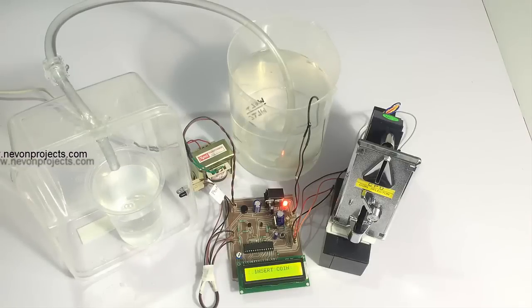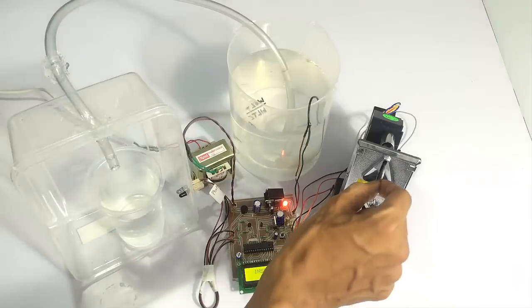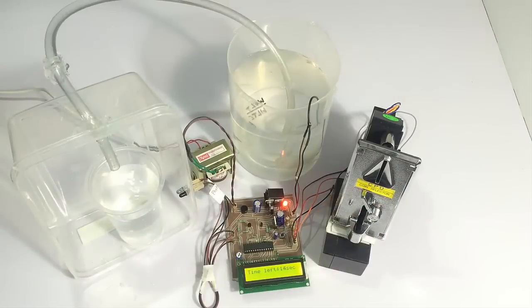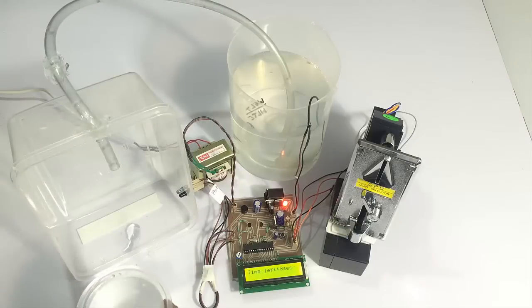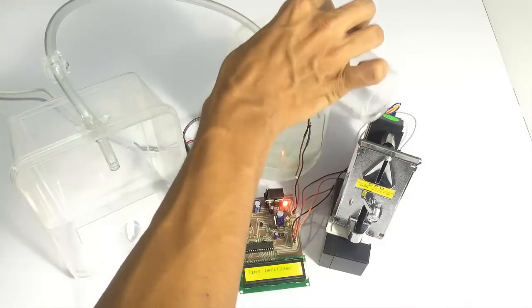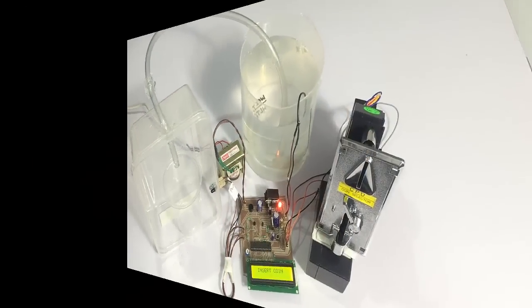Now let's check one more feature. Let's insert a coin to start the supply and then let's remove the glass in between the supply. So now it's pouring water. Now let's remove the glass, and as you can see, as soon as it detected the glass is not in place, it stopped the supply. This is how the system provides a fully automatic water dispensing system. Thank you.